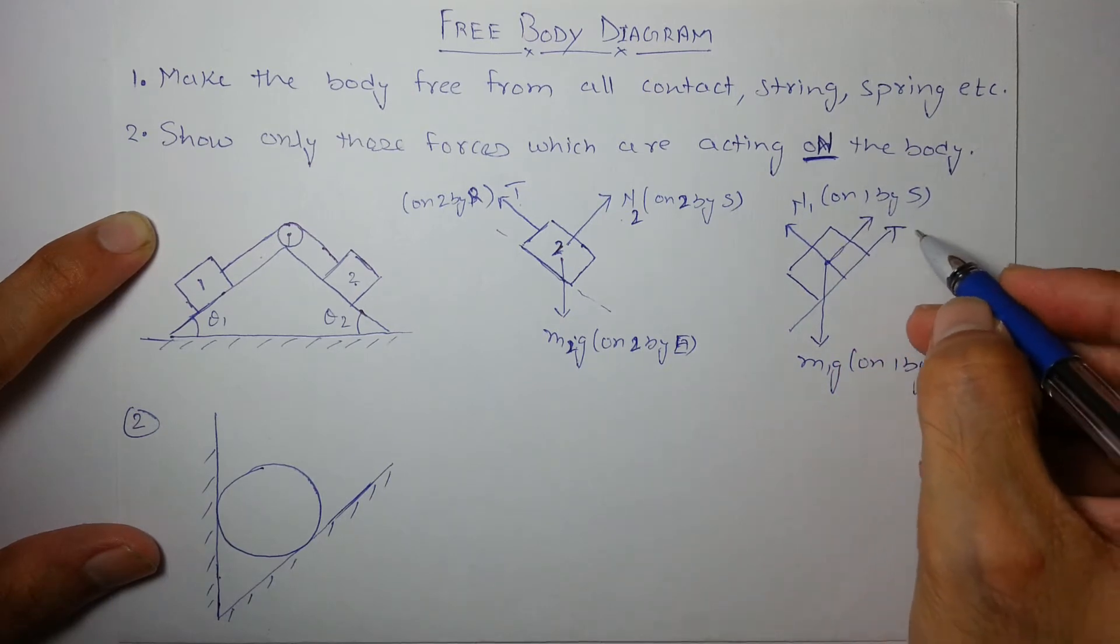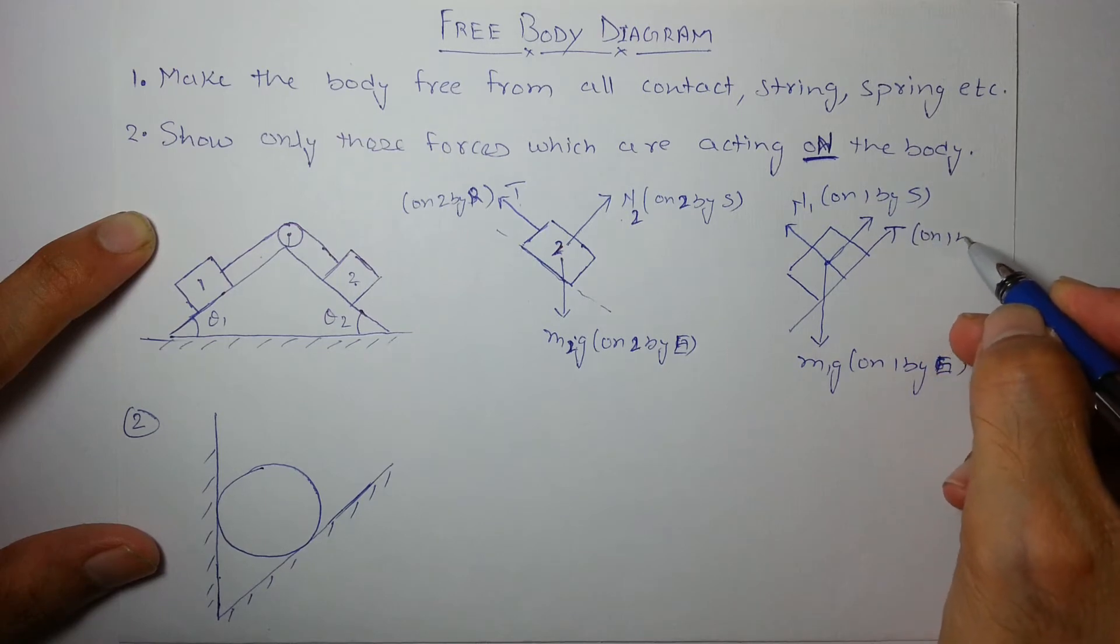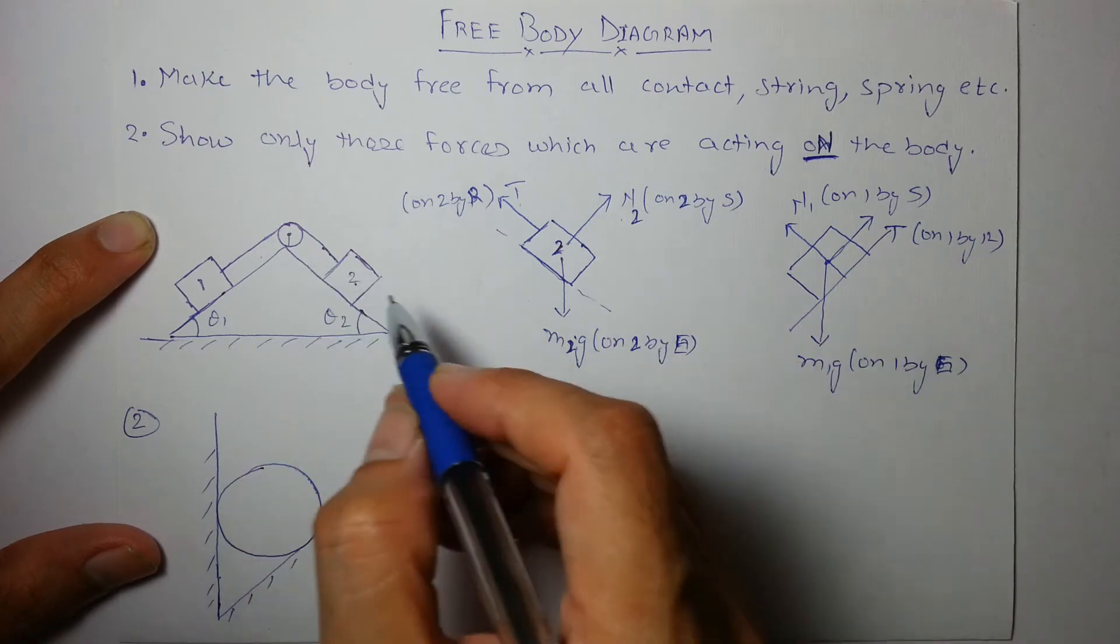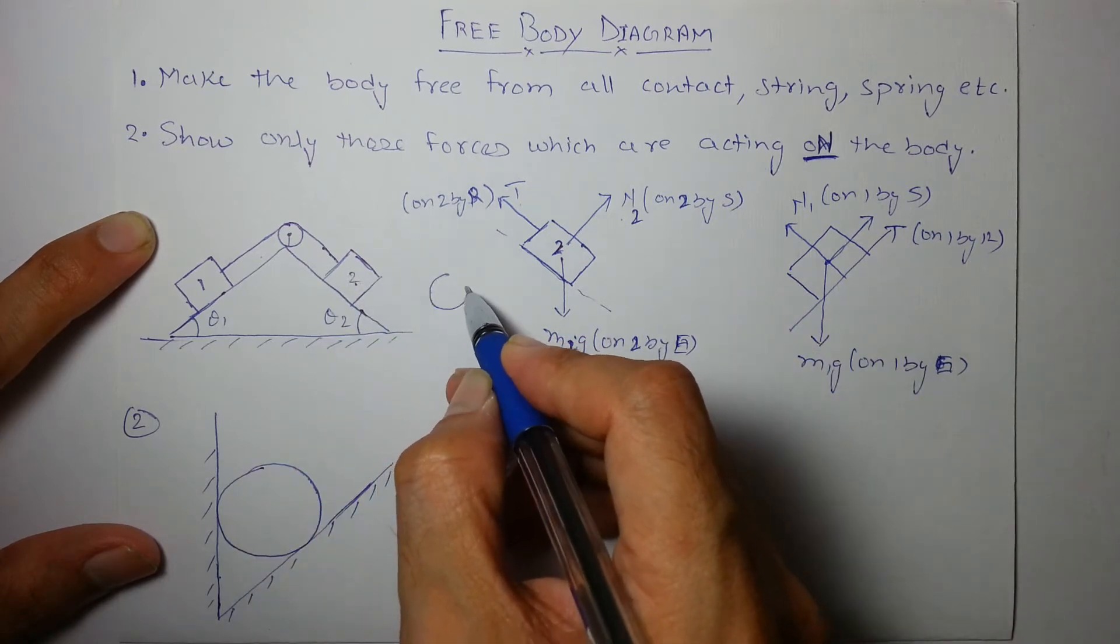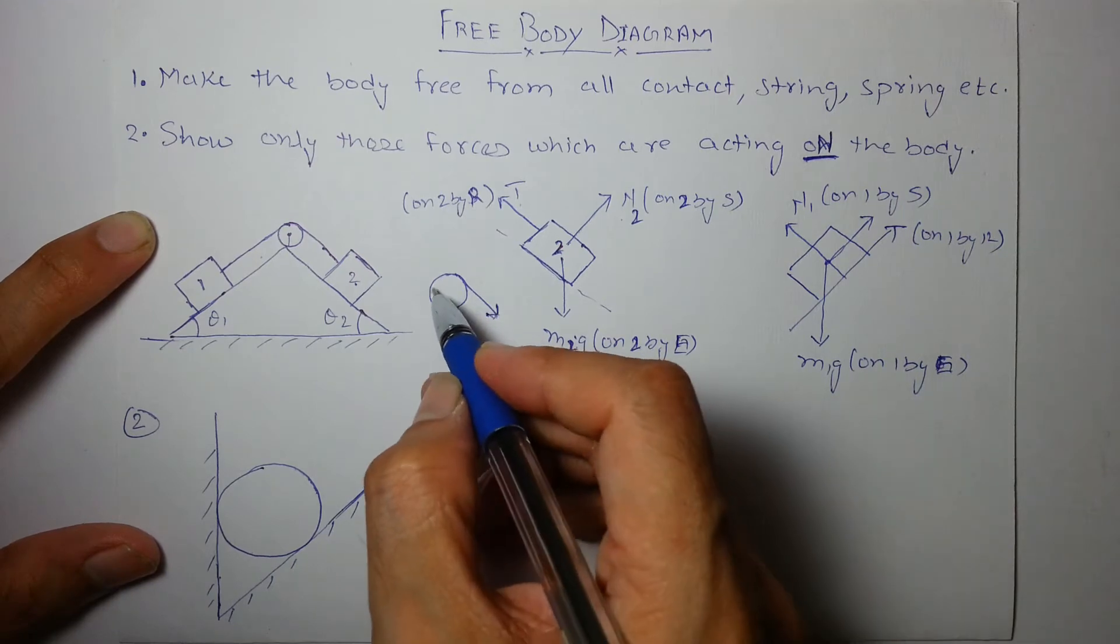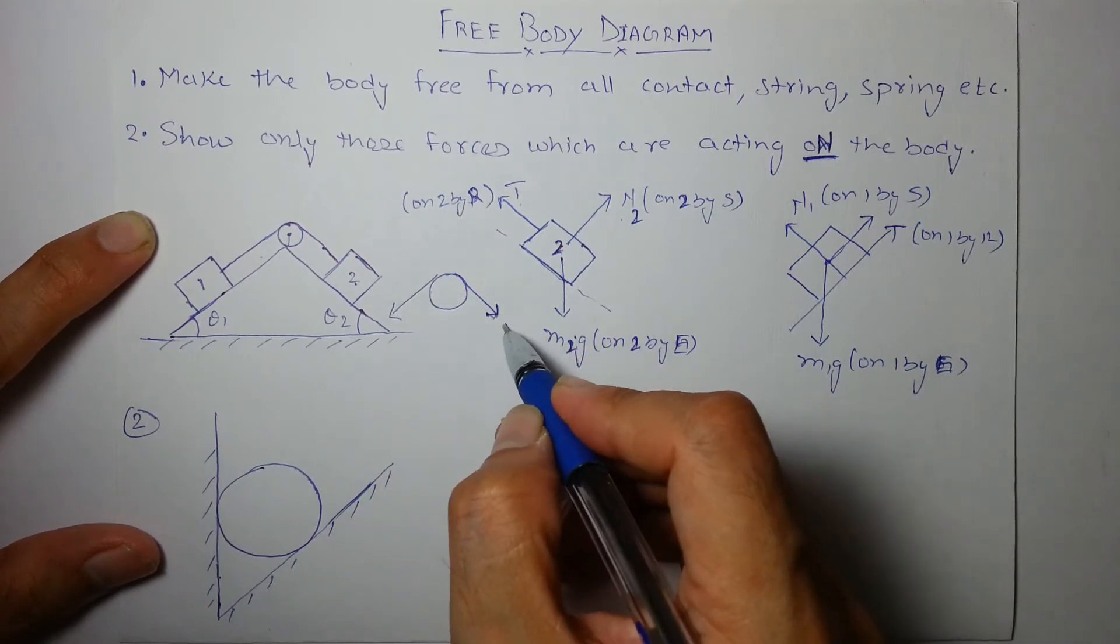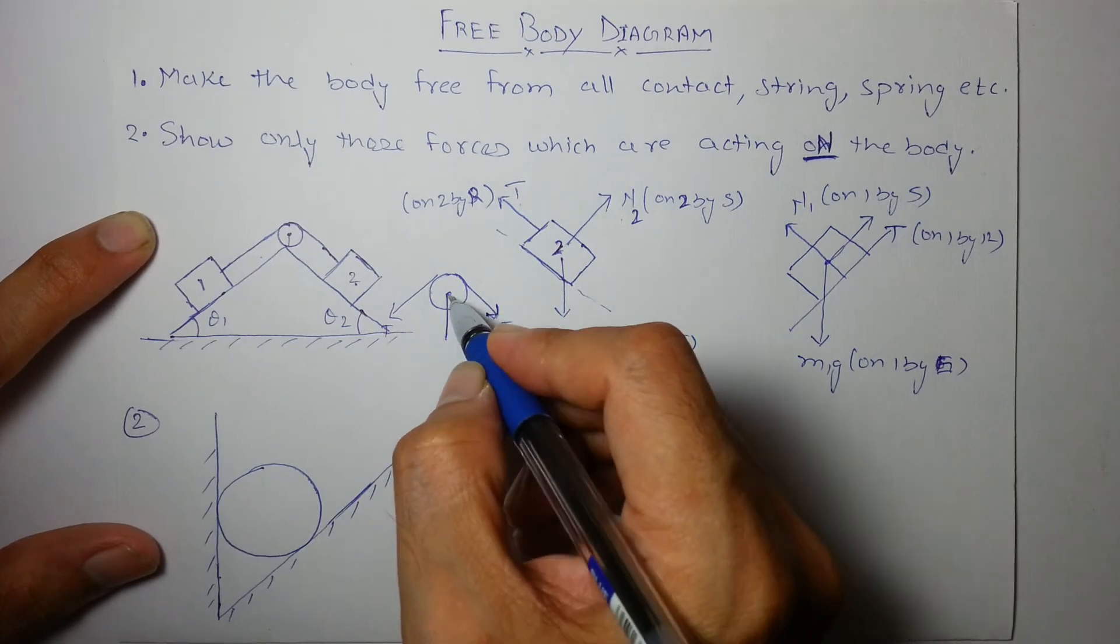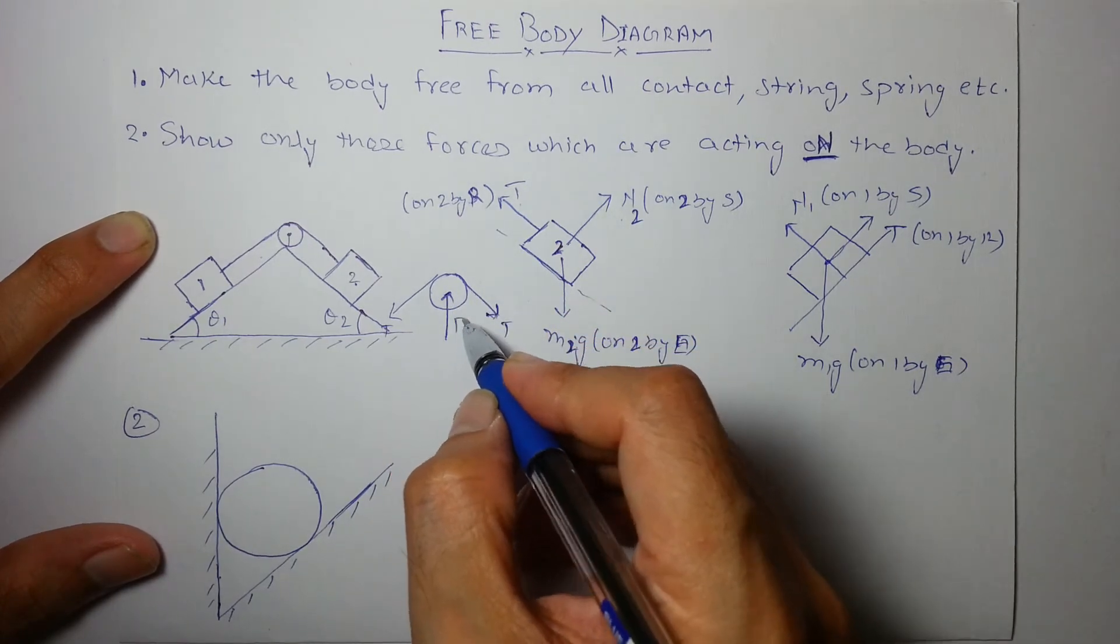Let us also draw the FBD of this pulley. So pulley's light, so we'll have tensions on both sides to be same, and there must be some additional force by the support we call it fs.